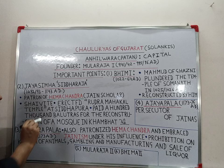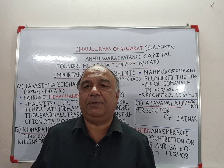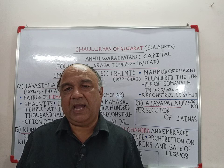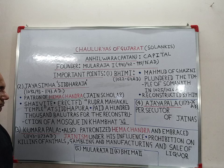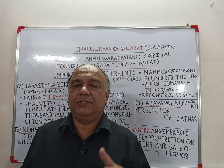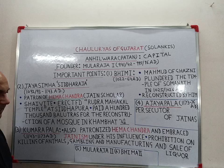Jaisingh Siddharaj was a follower of Shaivism — that is, he was a Shaivite. So he constructed many temples across his kingdom. Among them, the Rudra Mahakal Temple at Siddhapur is very famous. During his rule, in a communal clash, a mosque in Khambat was damaged.